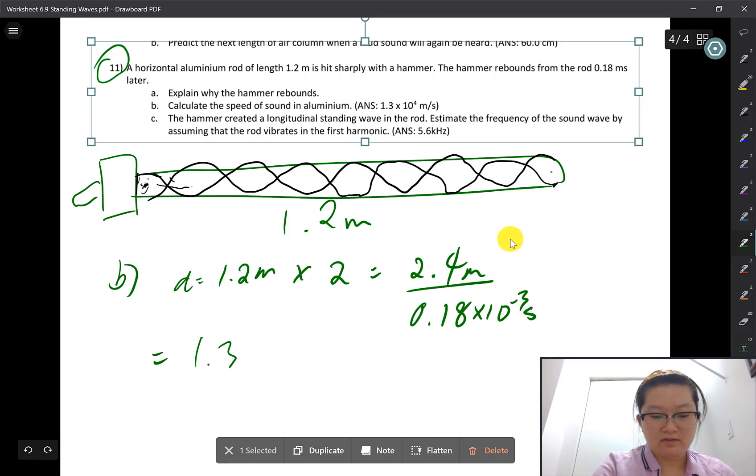That equals 1.3333 or roughly 1.3 times 10 to the power of 4 meters per second for the speed of sound.